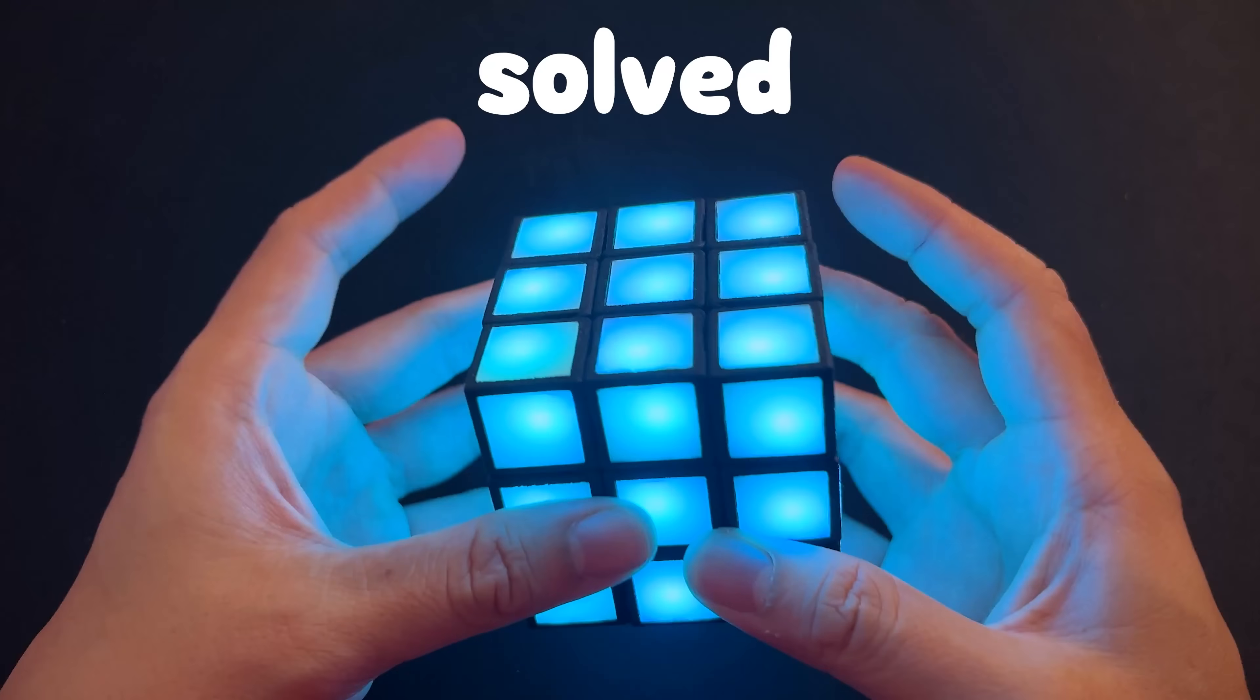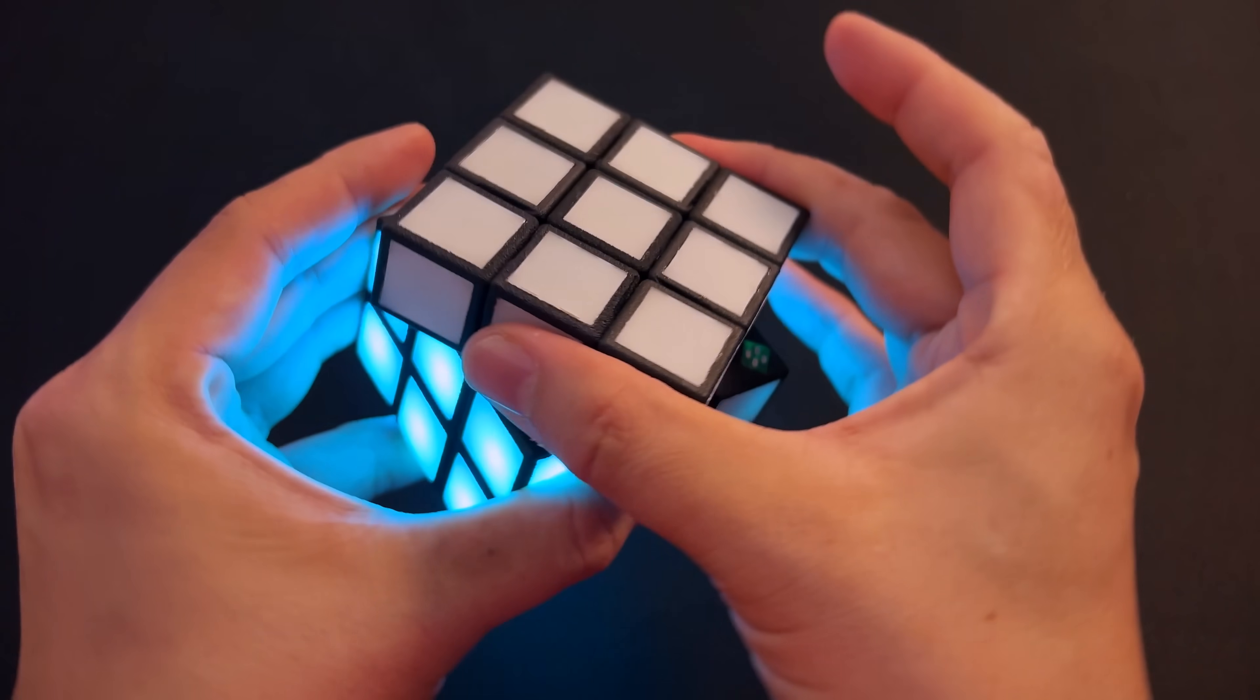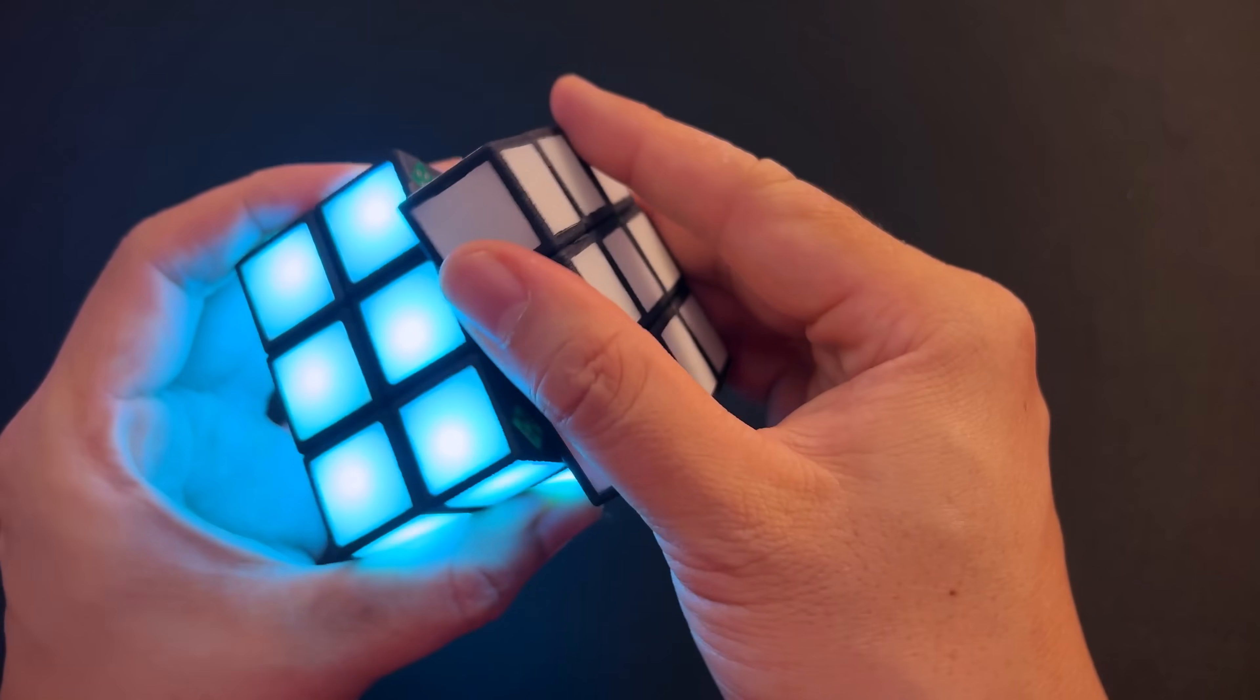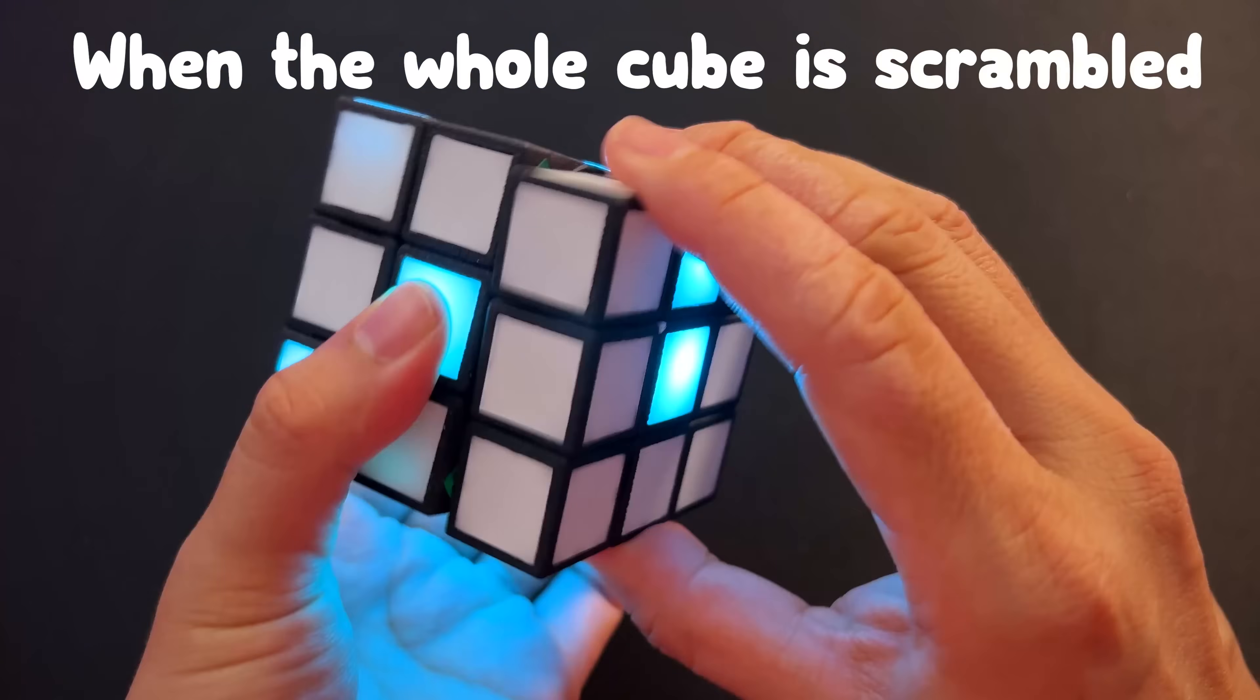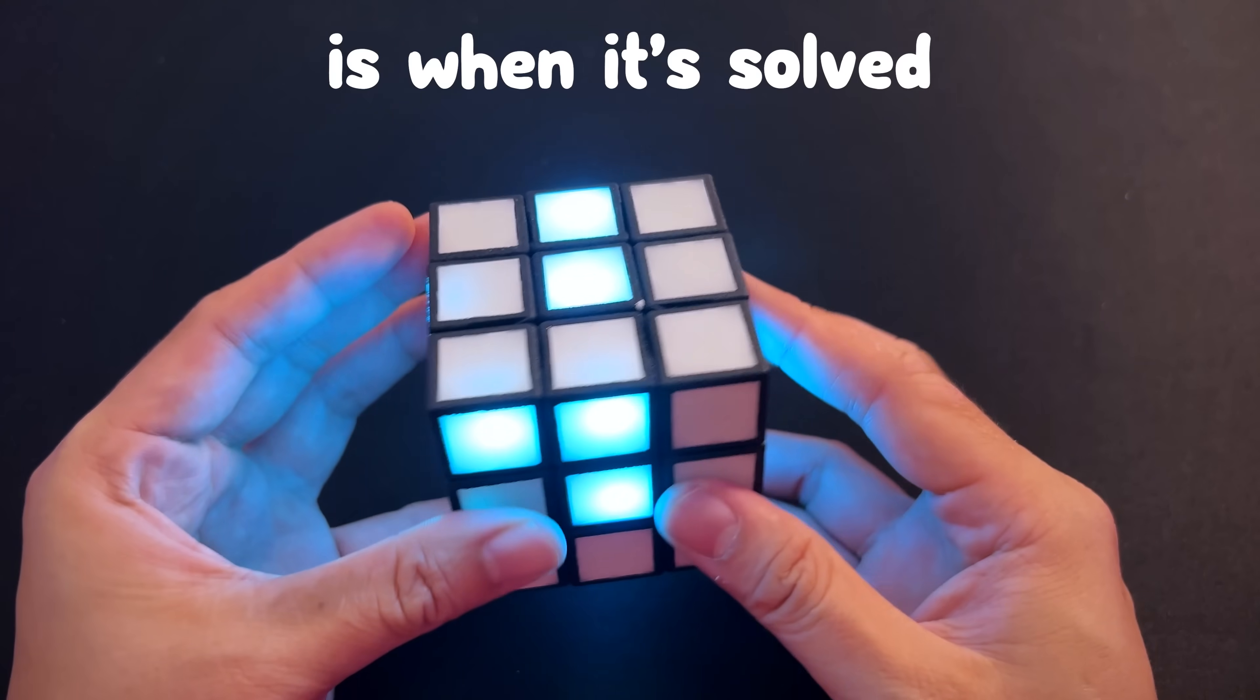This Rubik's Cube is fully solved, but watch what happens when I turn it. As soon as a piece is out of place, it goes dark. And that means if the whole cube is scrambled, the only way you know that it's solved is when it's solved.